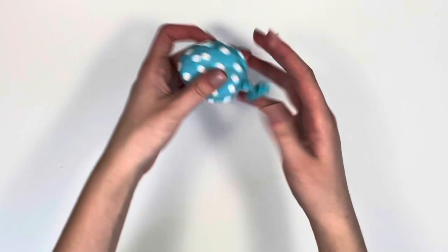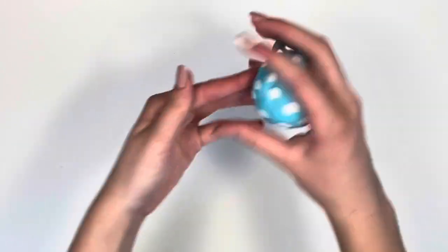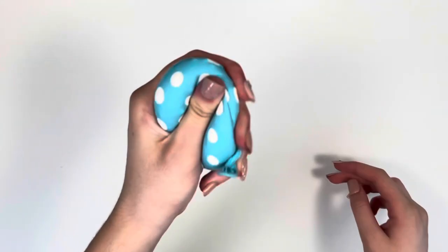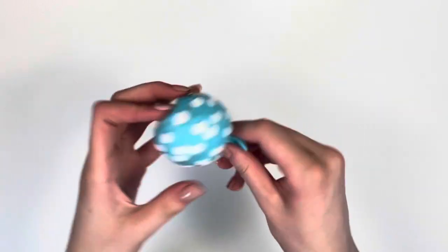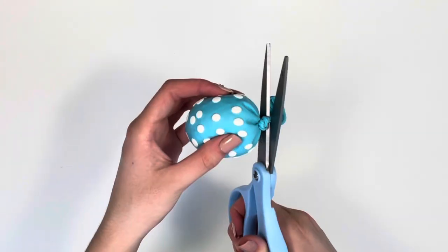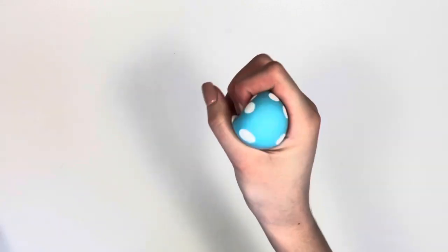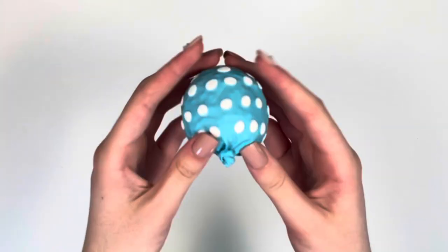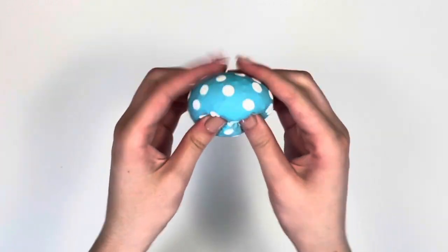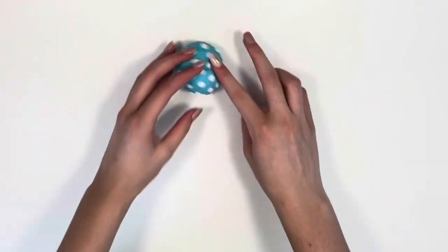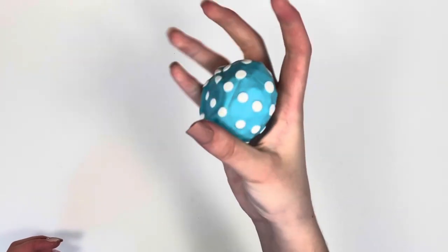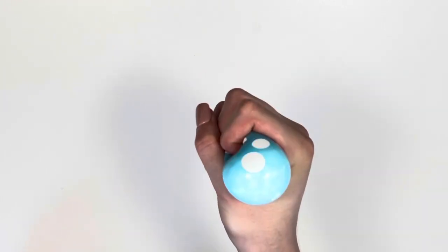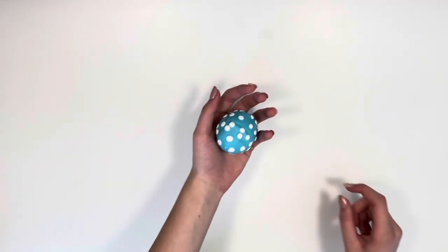Now pull it off the funnel. Now simply go ahead and tie your balloon. Now your stress ball is all completed, and you can actually go ahead and cut off the tail. It also makes some really great ASMR.